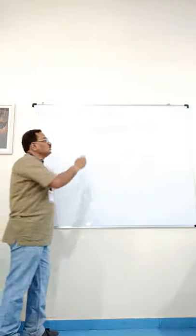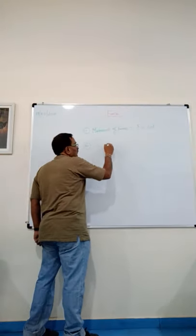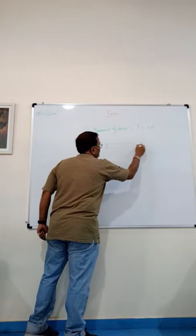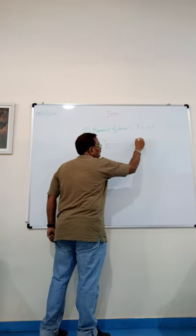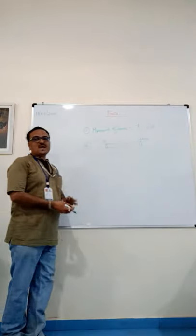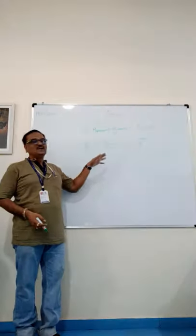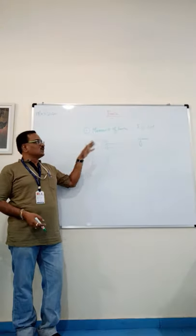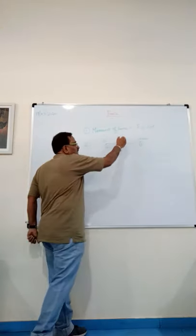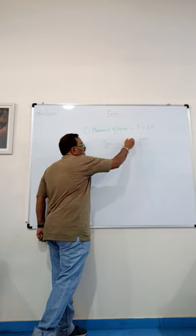The second type of numerical is regarding the uniform meter rule. The uniform meter rule goes from zero to 100 centimeters. We assume that the whole weight of the body is concentrated at the 50 centimeter mark — that is the centre of gravity — because the centre of gravity is exactly at the midpoint of the object.